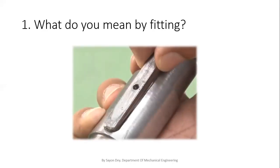Here in this picture, we can see this is an entire assembly. There is a shaft and hole, as I have discussed earlier in my lecture video. To remove the excess material from the upper part, we have to perform some material-removing operation in our fitting job to make a perfect fit.